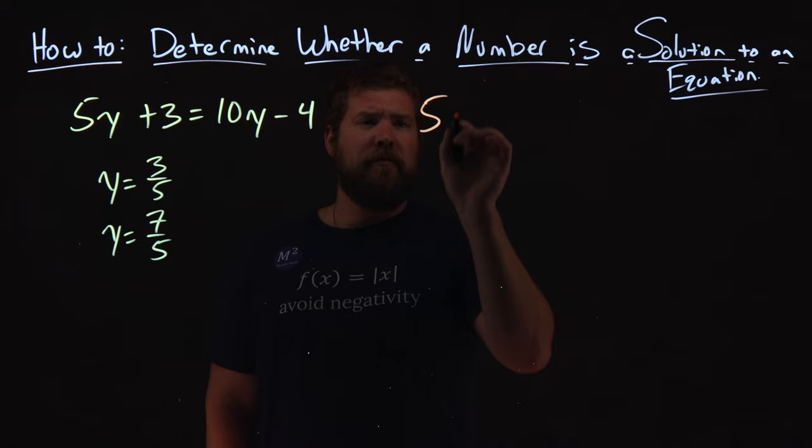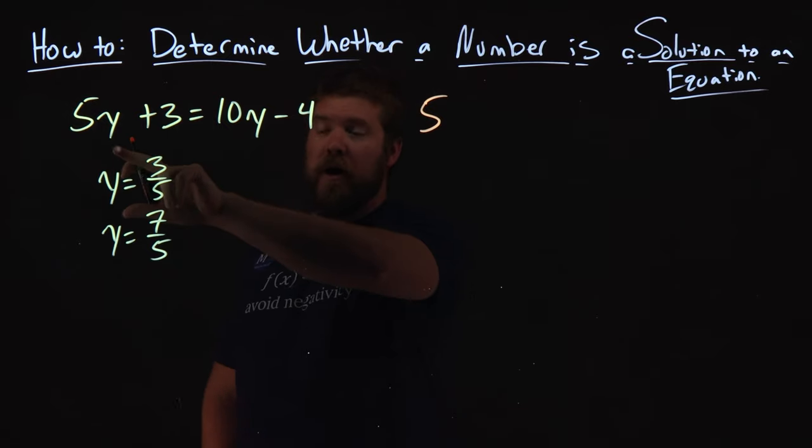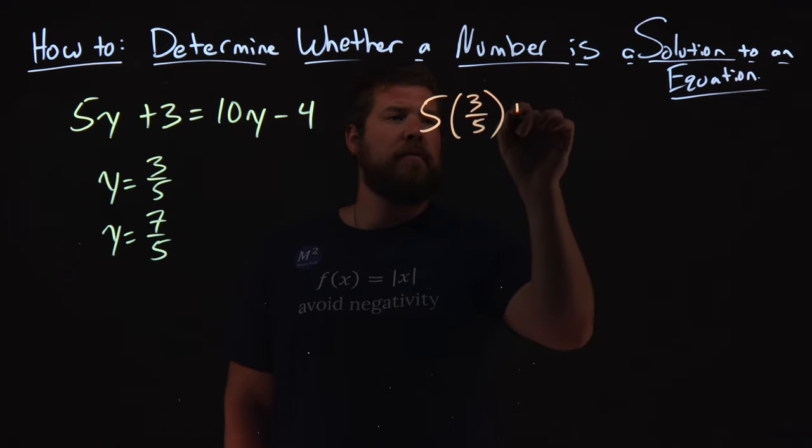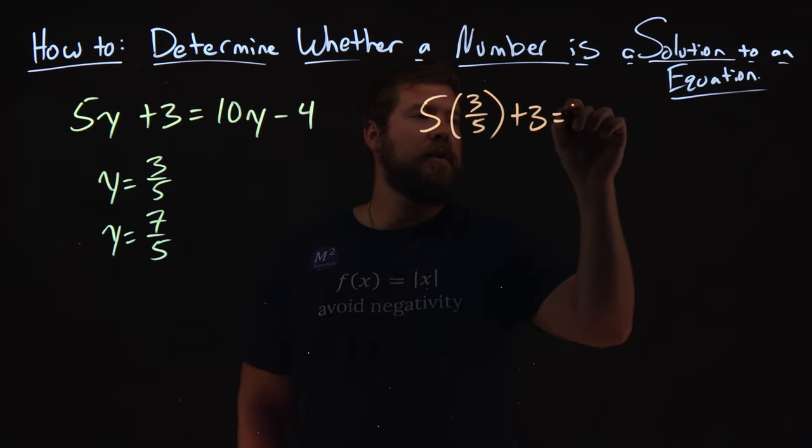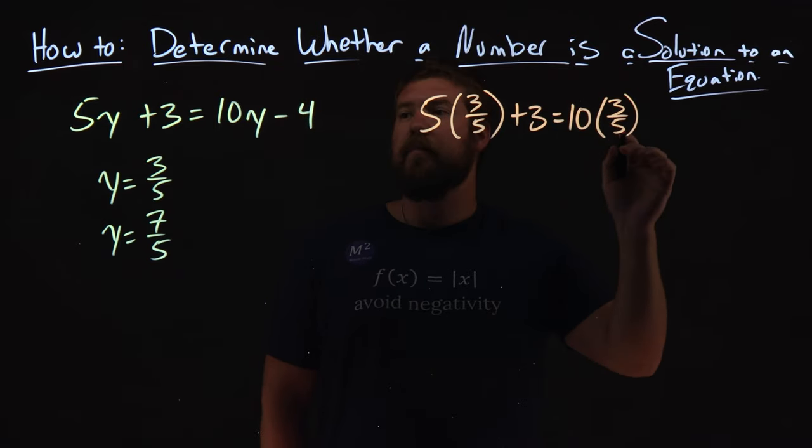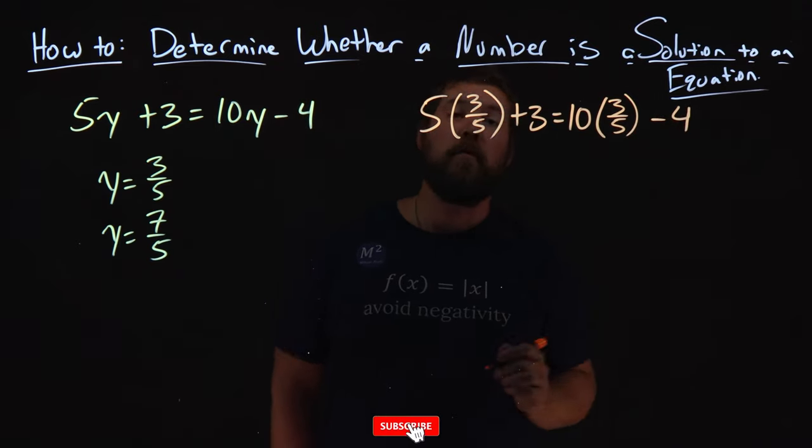I'm going to rewrite this: 5 times y, but I'm going to put 3 fifths in for y, plus 3 equals 10 times the other y, 3 fifths, minus 4.